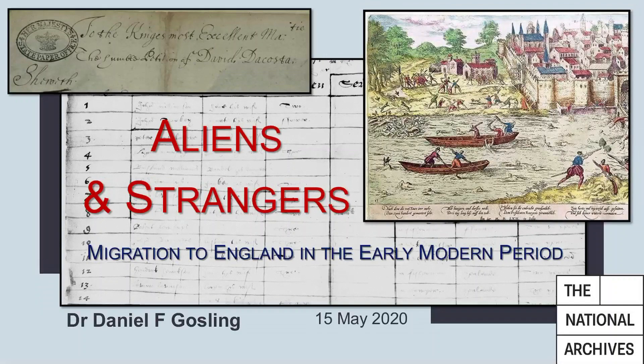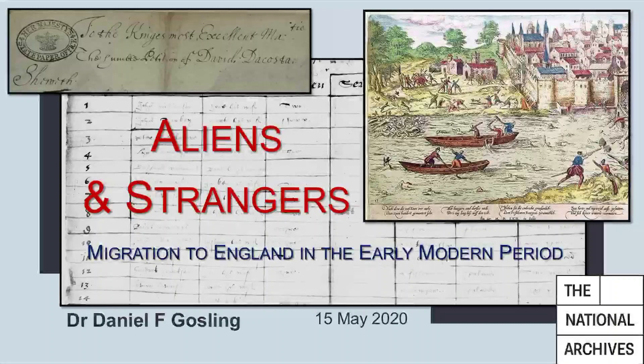The term aliens and strangers referred to continental migrants, those who came to England from mainland Europe. Between 1550 and 1750, a large number of these aliens and strangers settled in England for two main reasons. Firstly, there were those coming to England for economic reasons, for work. The English economy in the 16th century was largely reliant on the cloth industry, and foreign knowledge and skills were required to increase and improve English manufacturing, industry and trade.